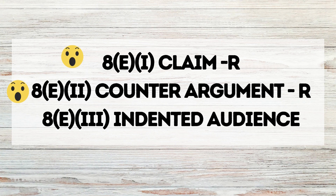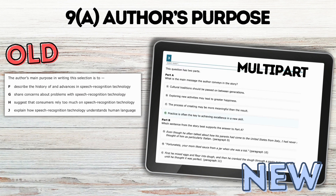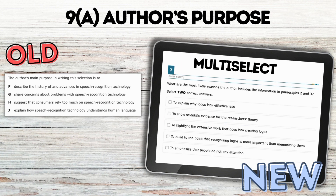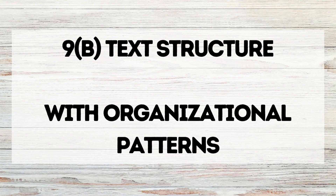I did not find any claim questions, which is a surprise since it's a readiness standard, nor counter argument, and there weren't any for intended audience. Now author's purpose was a huge hitter — there were a ton of questions on this one before. You're going to see multiple choice questions where students select what the author is trying to do, but also multi-part where first you select their purpose or message and then support that in part B with text evidence. They'll probably also see multi-select picking two reasons why the author wrote what they wrote, and a short constructed response defending it. And I didn't find any that were labeled specifically text structure — I would pair those with the organizational patterns TEKS.